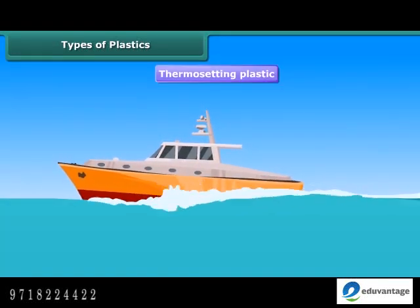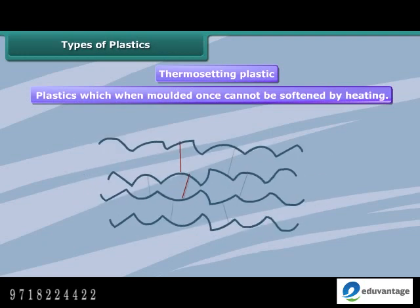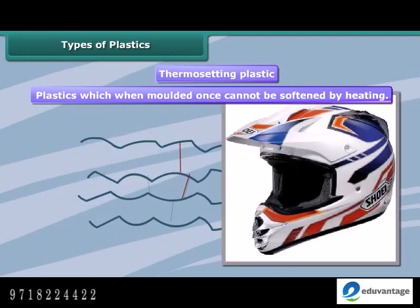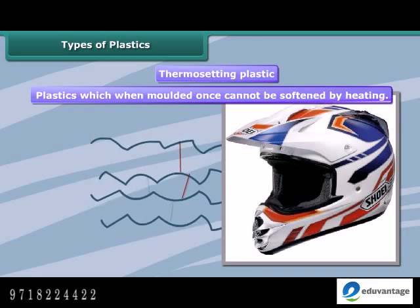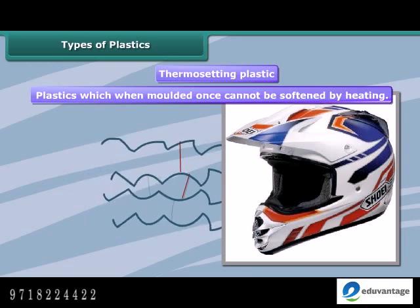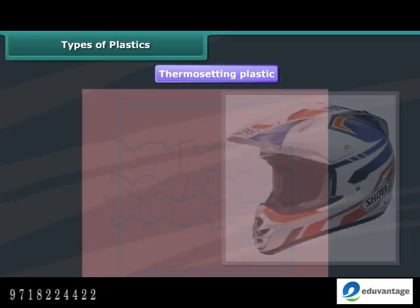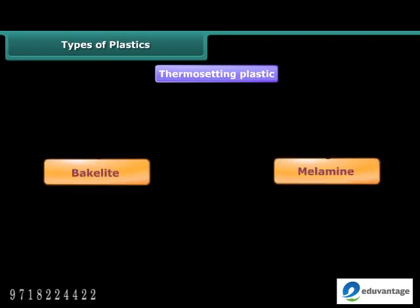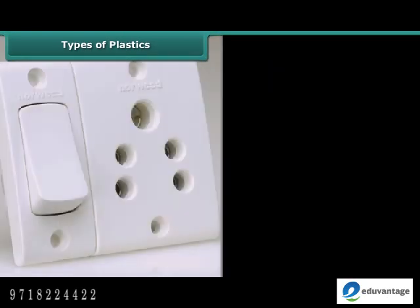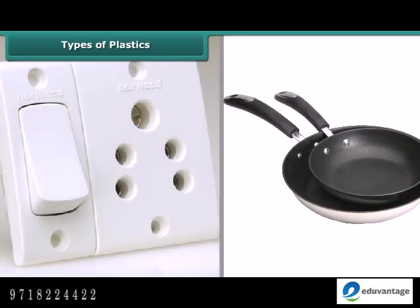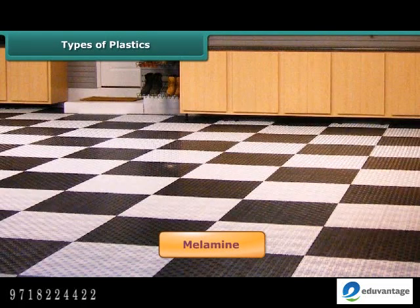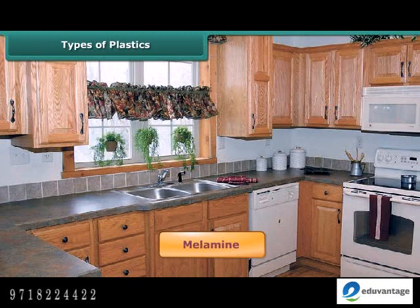Thermosetting plastics have a cross-linked arrangement of their constituent units. These can be melted and take shape once only. After they have solidified, they stay solid. On subsequent heating, they do not become soft and hence do not change their shape. Therefore, these cannot be recycled. Bakelite and melamine are two examples of thermosetting plastics. The familiar electrical switches and handles of utensils are made of bakelite as it is a poor conductor of heat and electricity. Melamine is used for making floor tiles, kitchenware and certain fabrics as it is fire resistant.